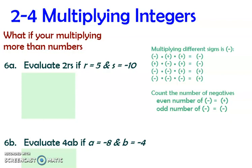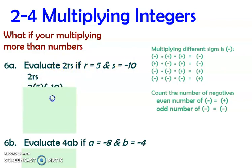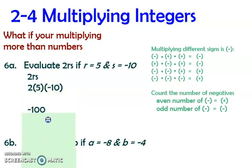Here's example number six, the last type of example. We're going to evaluate 2rs by substituting r = 5 and s = negative 10. So that becomes 2 times 5 times negative 10, which is 10 times negative 10. That gives us negative 100. Count the number of negatives — just one, so it's odd, meaning the answer is negative.